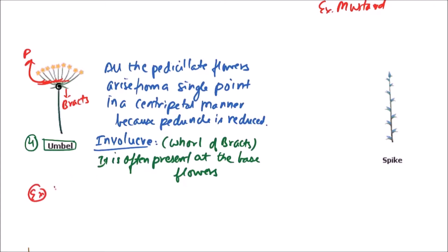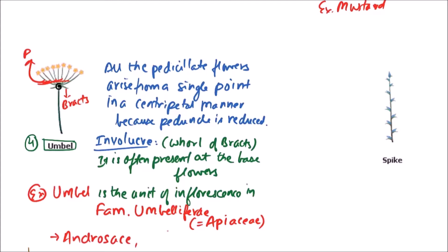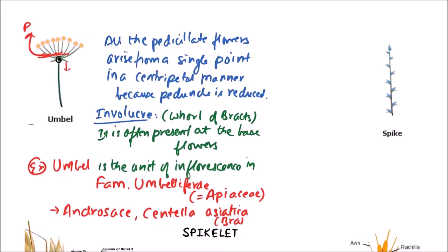Umbel is the unit of inflorescence in family Umbelliferae, which is also known as Apiaceae. The members include Androsis and Centella Asiatica, which is also known as Brahmi. So this is the Umbel.